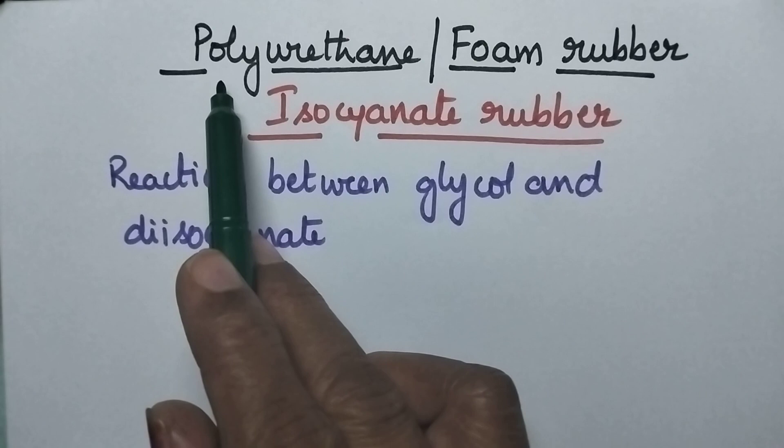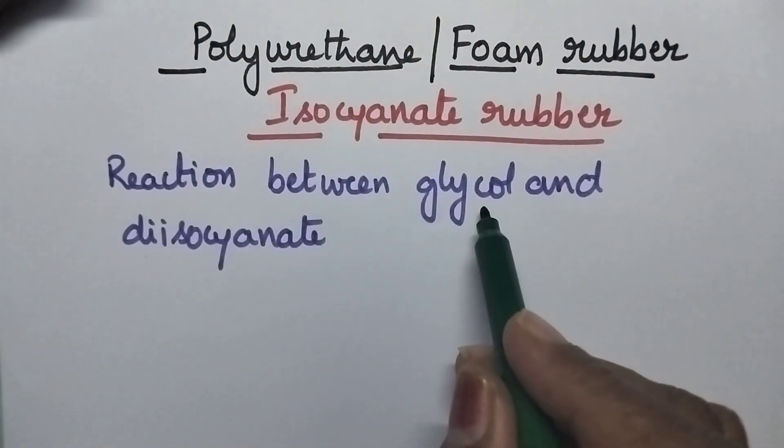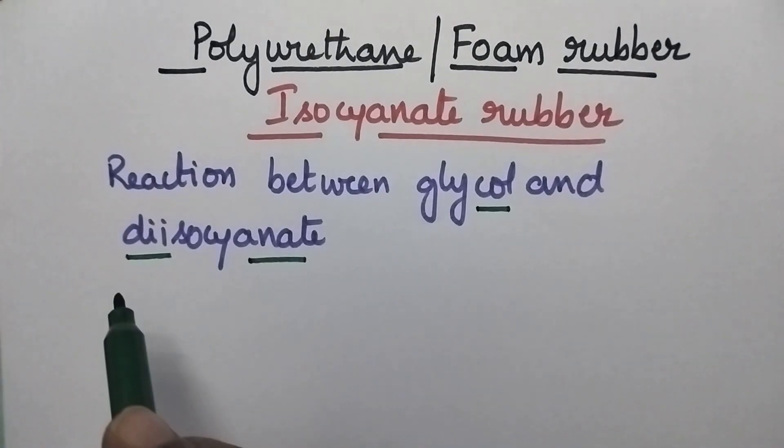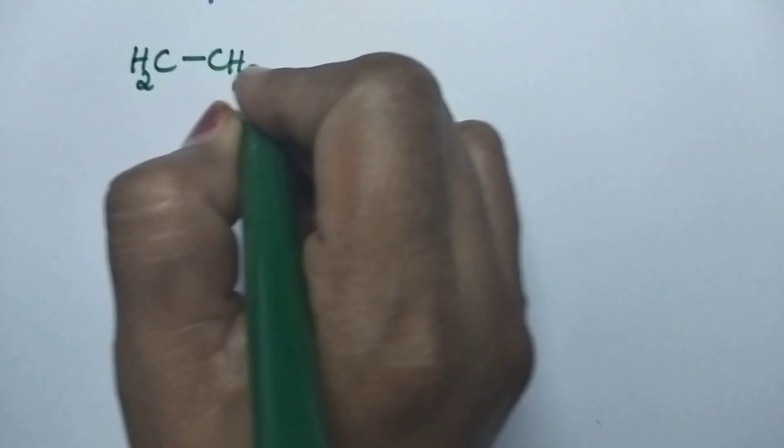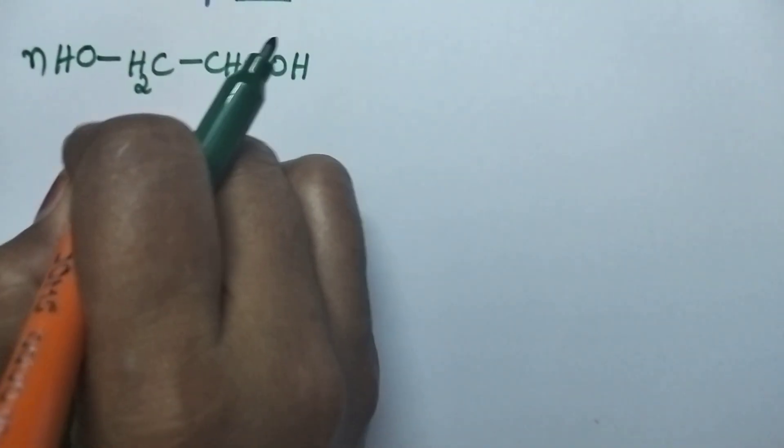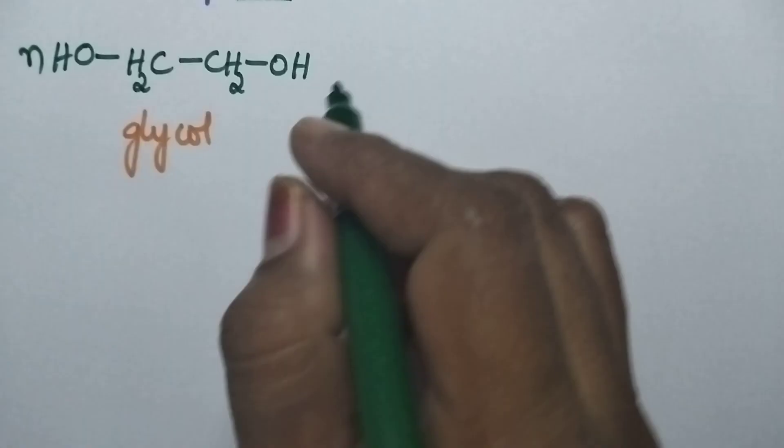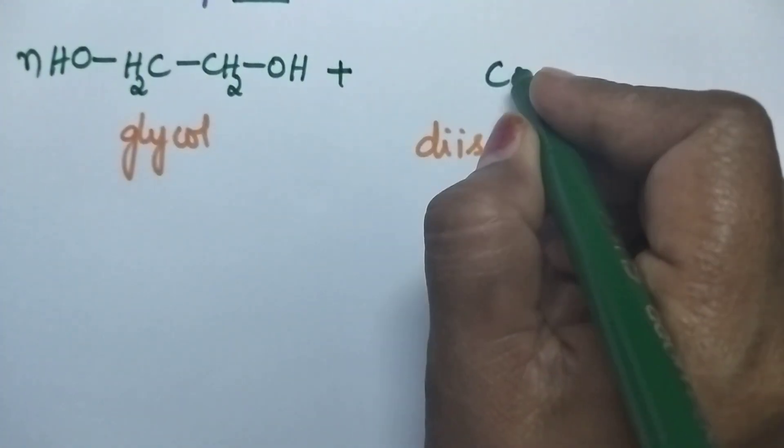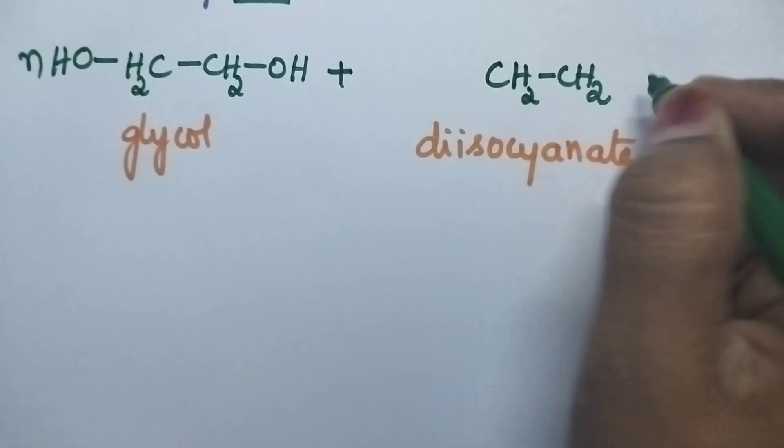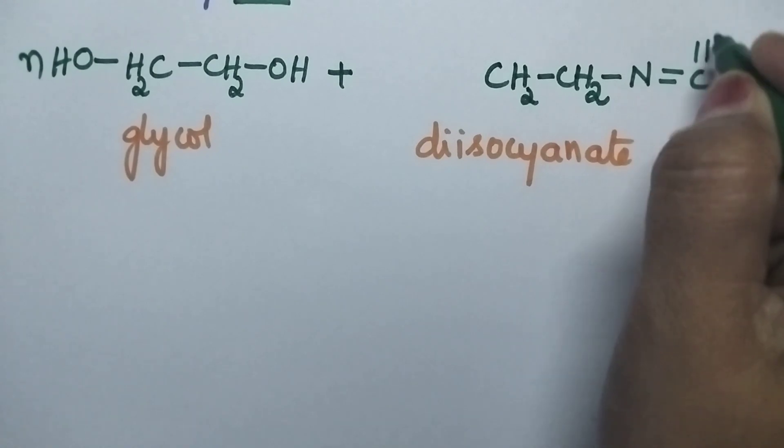This polyurethane can be prepared by the reaction between the glycol and diisocyanate. So coming to the chemical equation, glycol can be represented as CH2CH2OH. It is the structure of glycol which consists of two hydroxy groups. It reacts with diisocyanate, which can be represented as CH2CH2 single bond N double bond C double bond O.